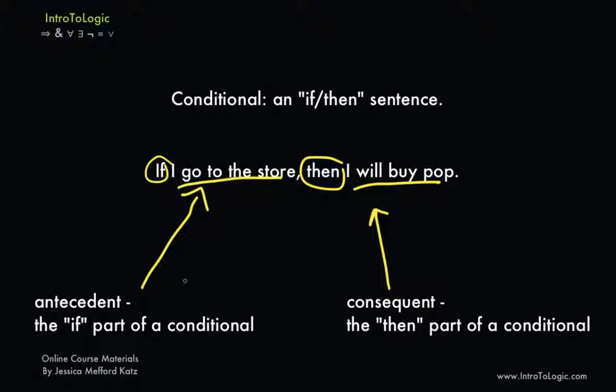And notice that when I ask you, what is the antecedent of this conditional? You shouldn't say, if I go to the store. Instead, remove the if part and it's just the assertion, which is the antecedent. Similarly, for the consequent, if I ask you what the consequent of this conditional is, you shouldn't say, then I will buy pop. The consequent is just the assertion part, which is, I will buy pop.